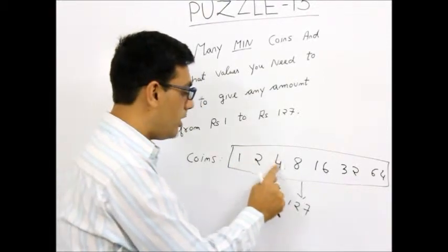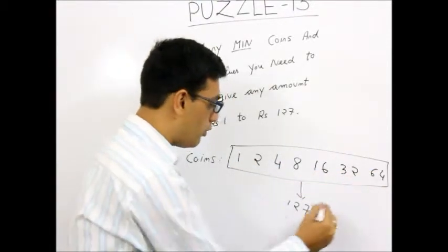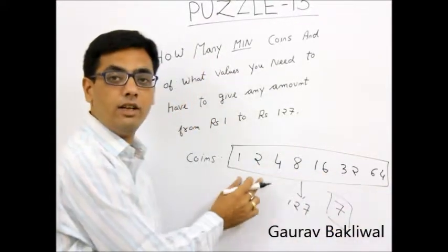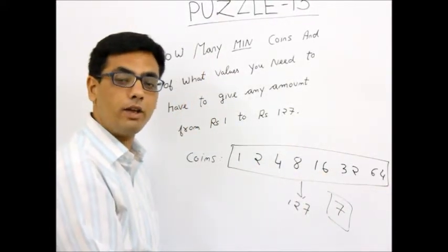So the answer is 1, 2, 4, 8, 16, 32, and 64. I would just need 7 coins and of these denominations to give any amount. Thank you.